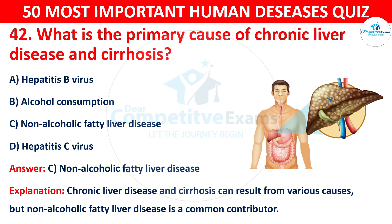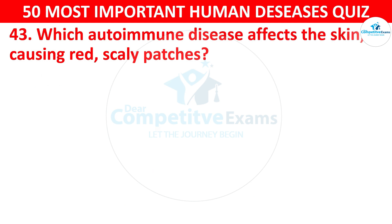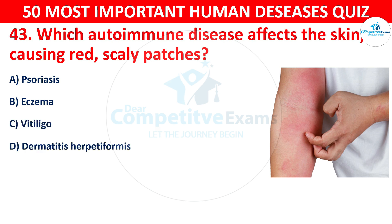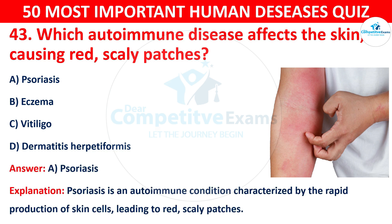Question 43: Which autoimmune disease affects the skin, causing red and scaly patches? Your options are: A) Psoriasis. The correct answer is A — psoriasis. Psoriasis is an autoimmune condition characterized by the rapid production of skin cells, leading to red and scaly patches.